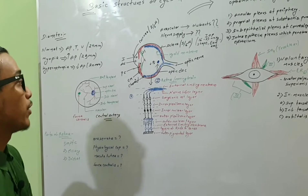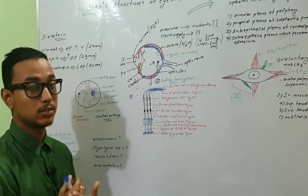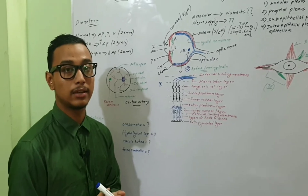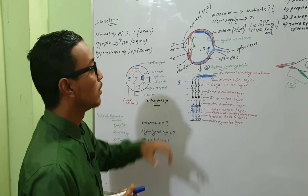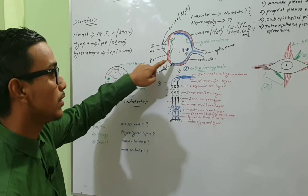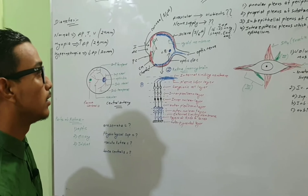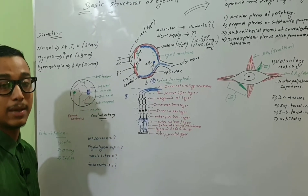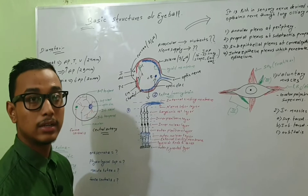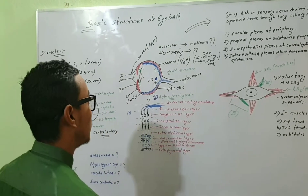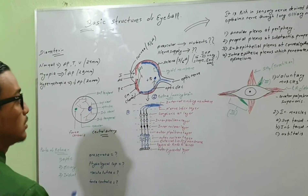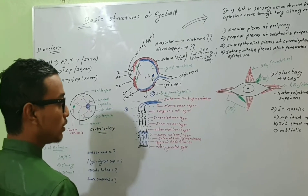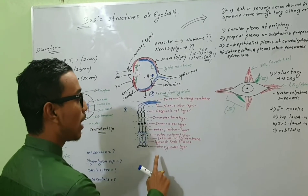This protection and nutrition is supplied mainly to the sensory layer, which is the retina. The inner layer — the sensory layer — is the retina, also known as the 'moving brain' because it is developed from the diencephalon. The retina has ten layers from outside to inside as shown in the figure.